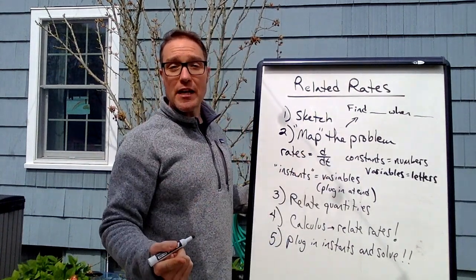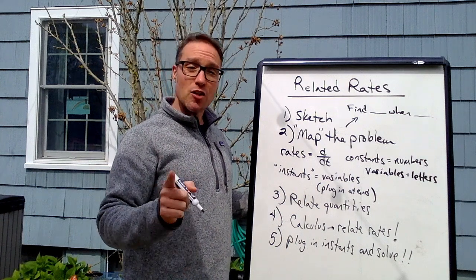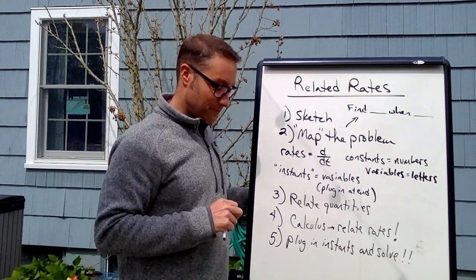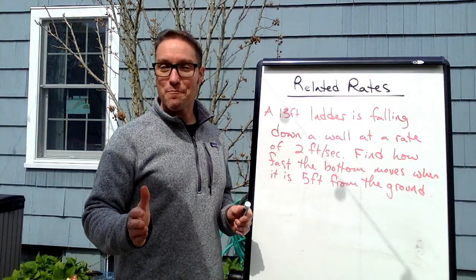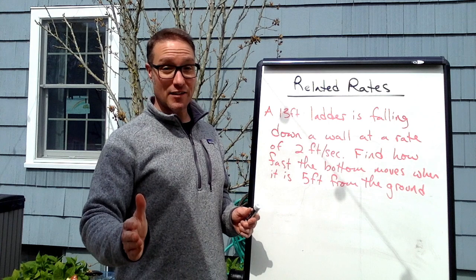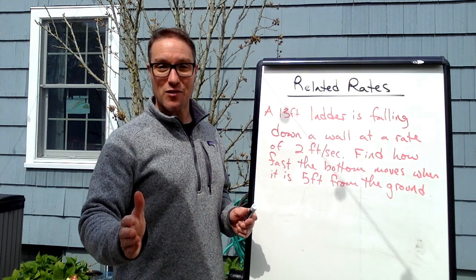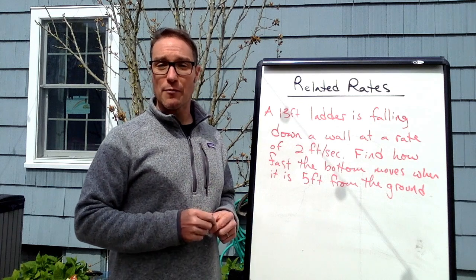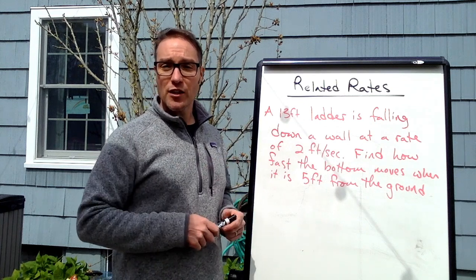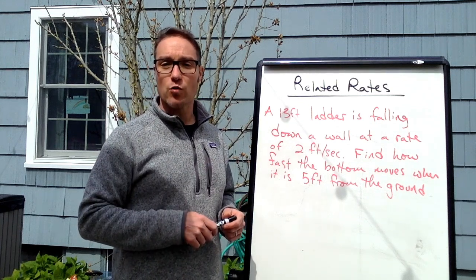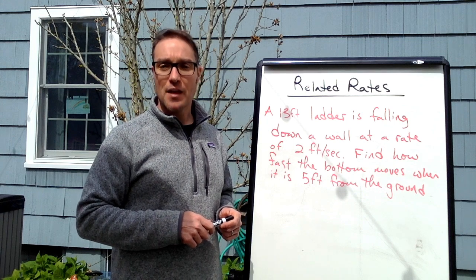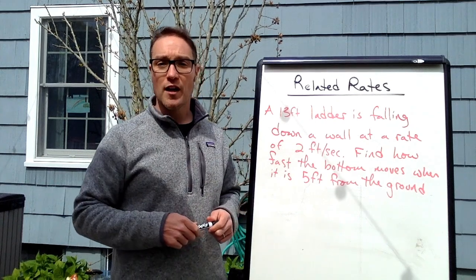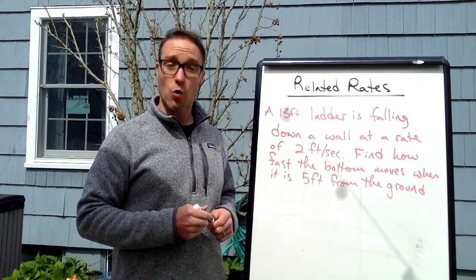Now I'm going to make up a couple of examples, and then I'm going to do an actual AP problem from 2019. What do ladders and lampposts have in common, besides Lin-Manuel Miranda and Mary Poppins Returns? Related rates, of course. This is a typical ladder problem in related rates. A 13-foot ladder is falling down a wall at a rate of 2 feet per second. Find how fast the bottom of the ladder moves away from the wall when it is 5 feet from the ground.